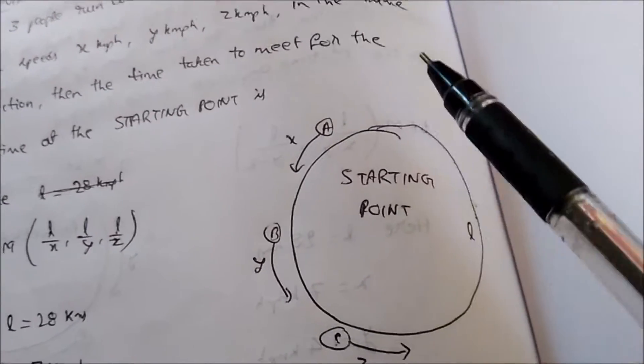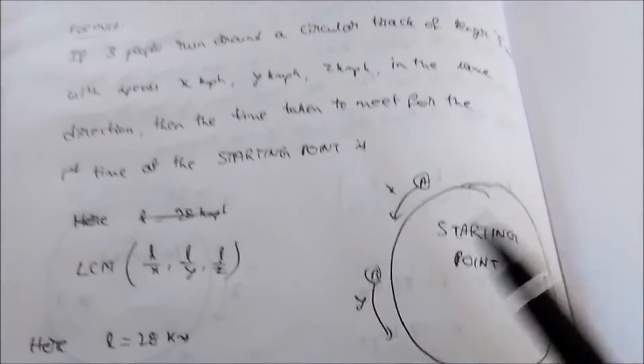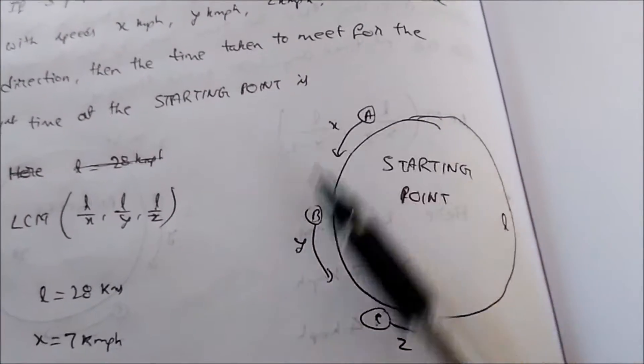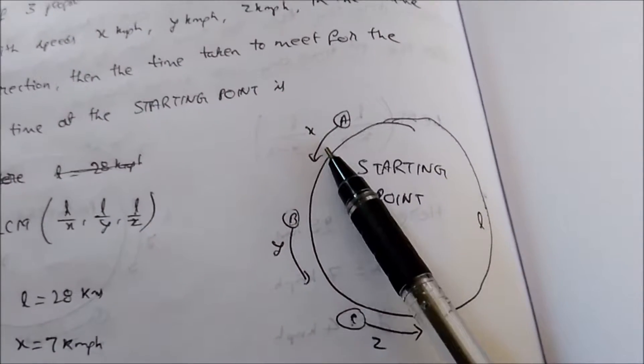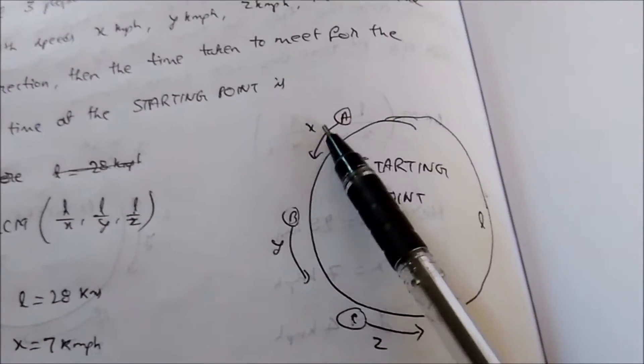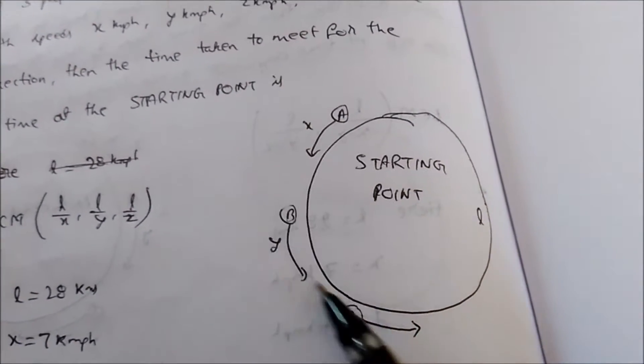Okay, there is a formula for this. I'll explain the formula. Assume that the circular track length is L and three people A, B, C are running around this circular track in the same direction with speeds X, Y, Z kmph.